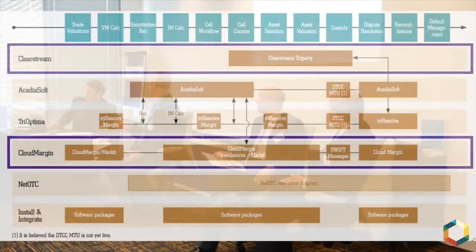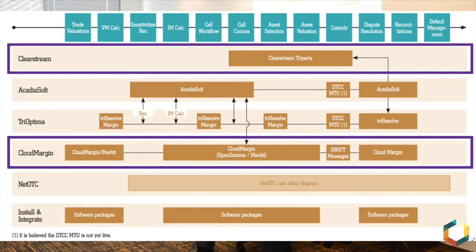Looking at the CloudMargin diagram row, there are various partnerships shown. In a conventional install-and-integrate approach you'd feed trade data to software using a file format — what's the equivalent with you? We divide the world between cleared and non-cleared. I was at JP Morgan in the early 2000s and the problem statement as described by the buy side and smaller banks was: I've got a problem with collateralizing my OTC derivative transactions.